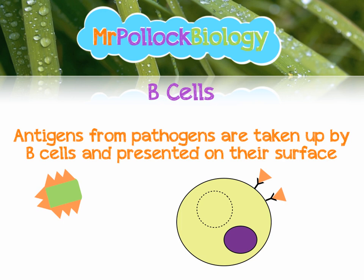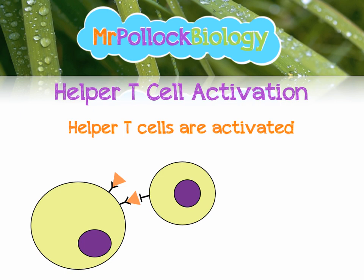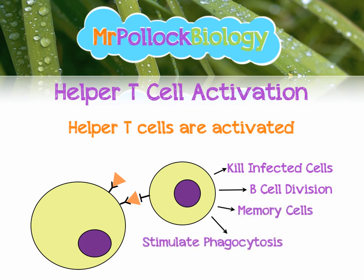What happens next? B cells can stimulate the activation of helper T cells. Those helper T cells can go on to do many different things: they can kill infected cells as killer T cells, they can stimulate B cell division, they can stimulate the formation of memory cells, and they can also stimulate phagocytosis. So these helper T cells are really very handy things to have in your body.